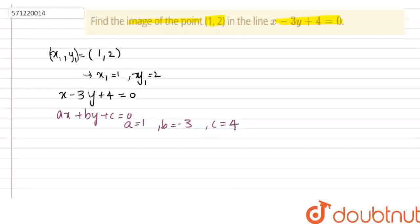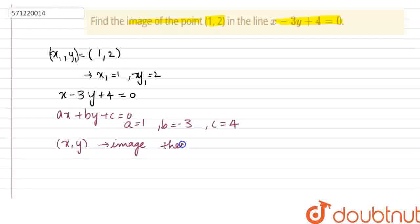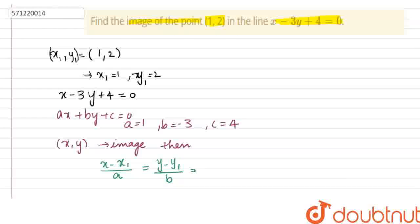Now, what is the image formula we have? If (x, y) is the coordinates of the newly formed image, then it should satisfy the equality: (x minus x1) divided by a, equal to (y minus y1) divided by b, which is equal to minus 2 into (ax1 plus by1 plus c) divided by (a squared plus b squared).